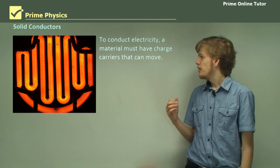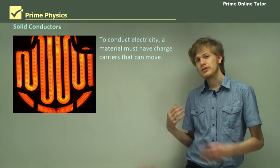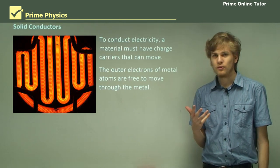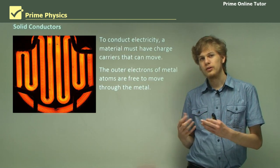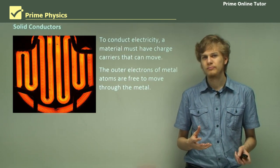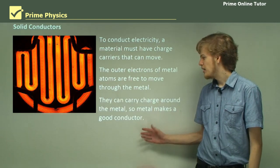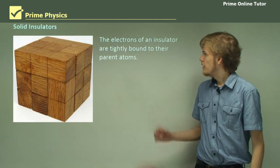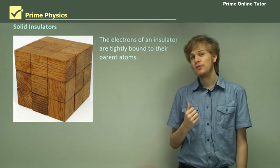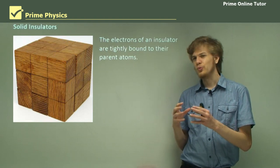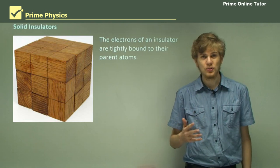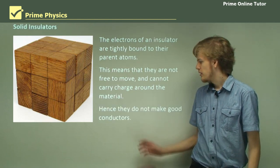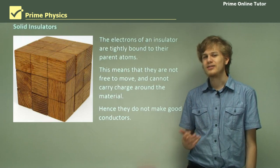To conduct electricity, a material must have charged carriers that can move — otherwise it can't have an electric current flowing through it. The outer electrons of metal atoms are free to move through the metal. We learned before that the electrons are moving about at random even if there's no current flowing through the metal. So the electrons are able to carry charge around the metal very easily, and metals make good conductors. The electrons of an insulator, on the other hand, are bound tightly to their parent atoms — they really don't want to move. So unless you apply an extremely high voltage, they're not going to. They are not free to move and cannot carry charge around the material, which means that insulators can't conduct an electric current.